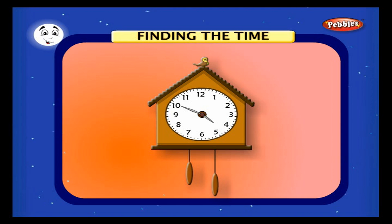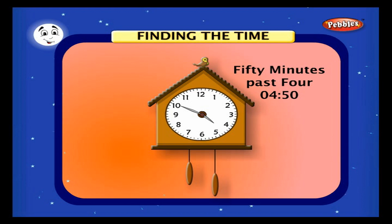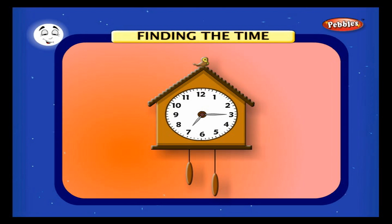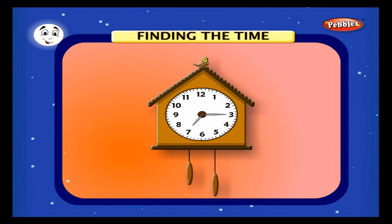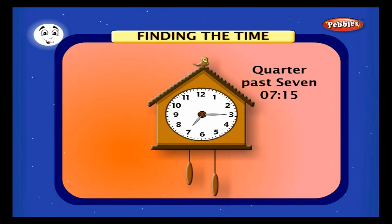In this clock the minute hand is at 3, it means 3 into 5 is equal to 15 minutes, and the hour hand is at 7. We call it 7:15 or quarter past 7.